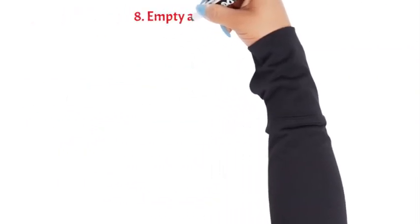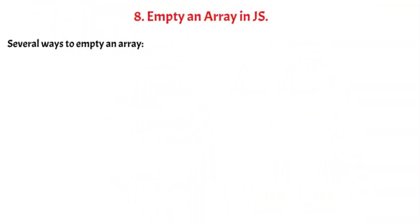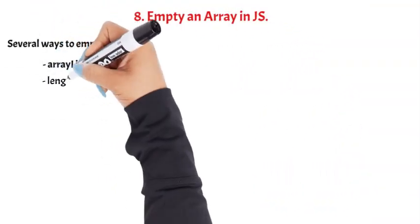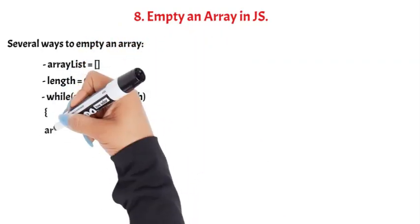Question 8: Empty an array in JS. Several ways to empty an array: arrayList = [] or length equal 0, arrayList.length, arrayList.pop().